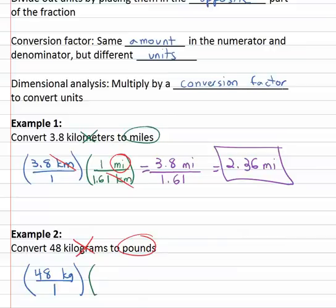So we're going to set up a conversion factor to get rid of the kilograms. Well, right now they're in the numerator, so to get rid of them we have to put them in the denominator. We want to change kilograms to pounds.